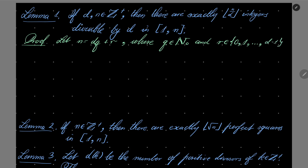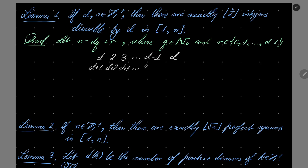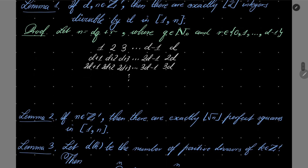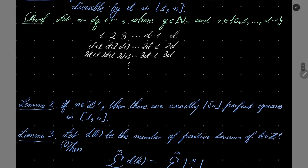Every number n can be written as d times some quotient q plus some remainder r, where q is a natural number and r is a remainder between 0 and d minus 1. Now let's group our numbers from 1 to n in the following groups: the first group is 1, 2, 3, up to d minus 1. Second group is d, d plus 1, d plus 2, d plus 3, and so on up to 2d minus 1, 2d. Then 2d plus 1, 2d plus 2, 2d plus 3, up to 3d minus 1, 3d, and so on.